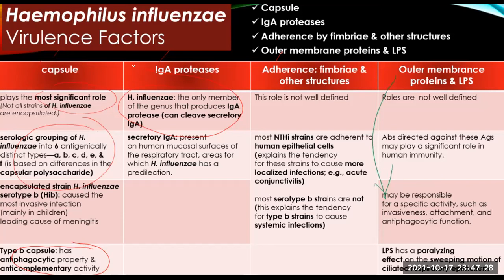Regarding adherence mechanisms: the role of adherence as a virulence factor for H. influenzae is not well defined. Studies indicate that non-typeable HI strains are adherent to human epithelial cells, whereas most serotype B strains are not. The lack of adherent capability in type B organisms may explain their tendency to cause systemic infections, while the adherent capability of NTHI strains may explain their tendency to cause more localized infections such as acute conjunctivitis.